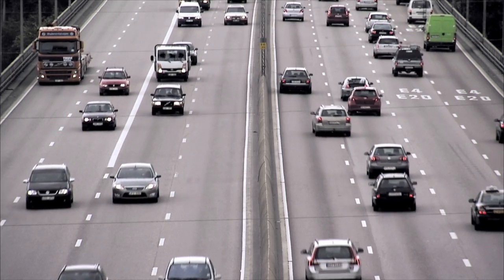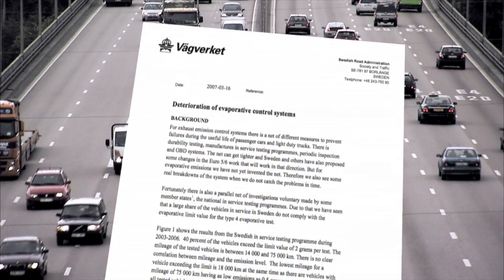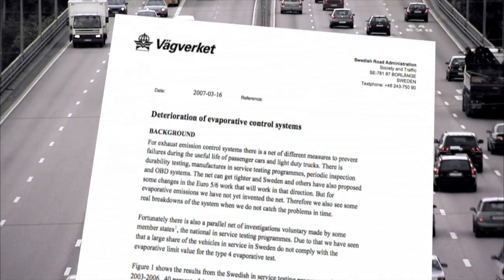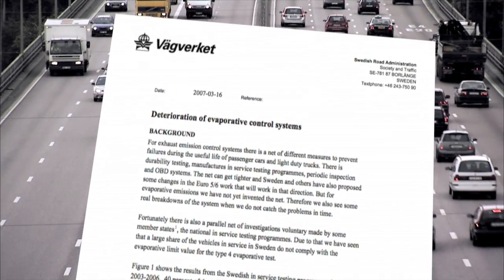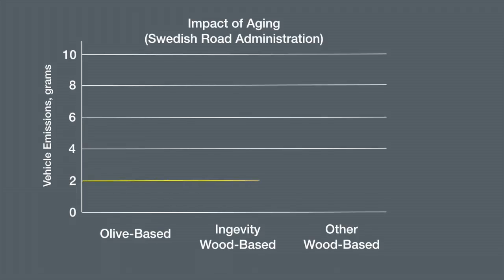Real-world studies show how these products performed over time. The Swedish Road Administration tested in-service vehicles in Sweden for evaporative emissions. The vehicles were diverse in both age and mileage. About half the cars tested in Sweden failed evaporative emissions tests. The failed vehicles primarily contained olive-based or a competitor's wood-based carbon.